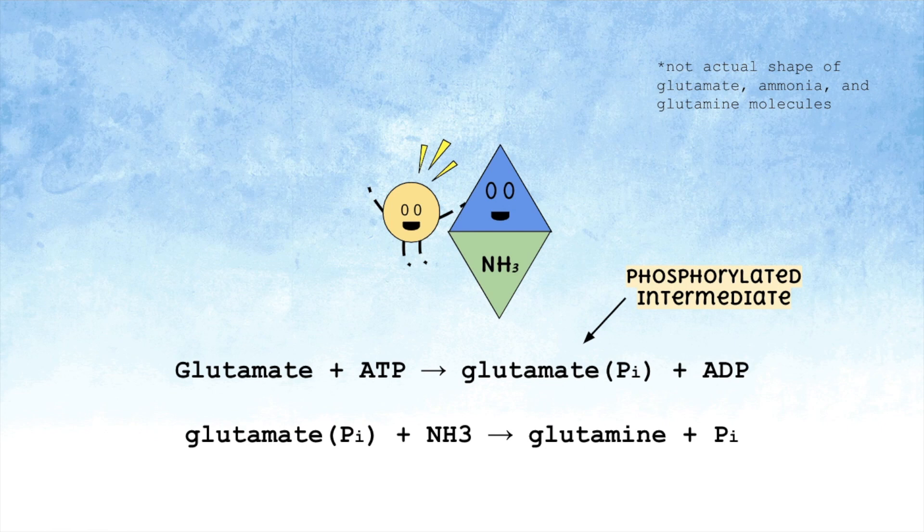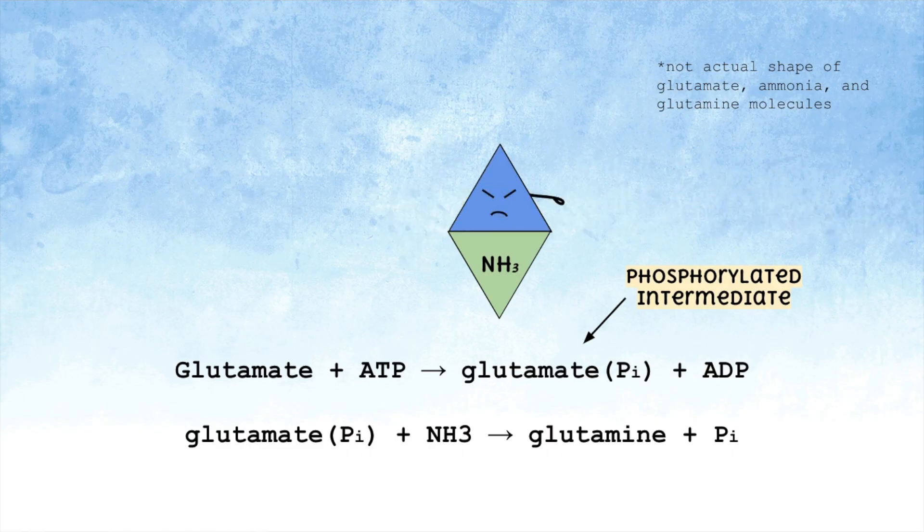However, just like ATP, the phosphorylated intermediate can't deal with the phosphate for too long, so it lets the phosphate go once it becomes glutamine.